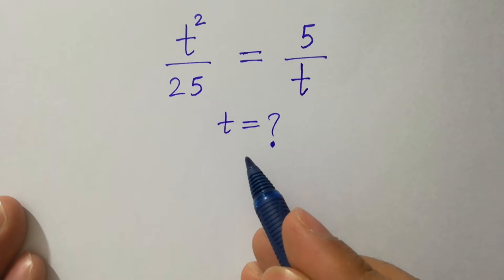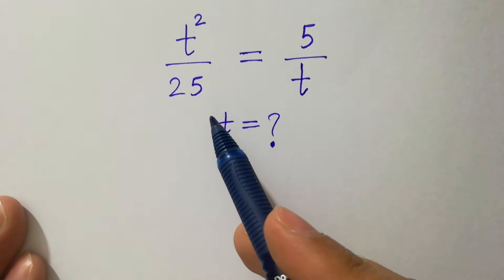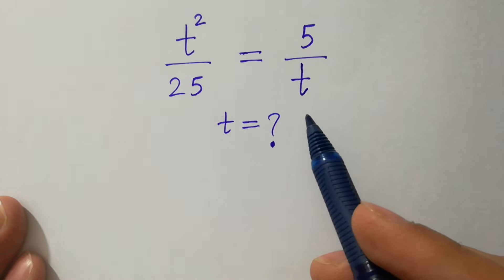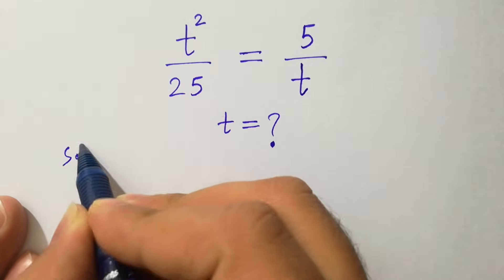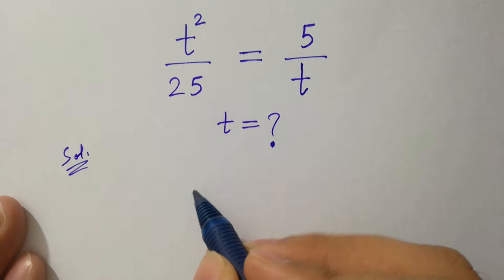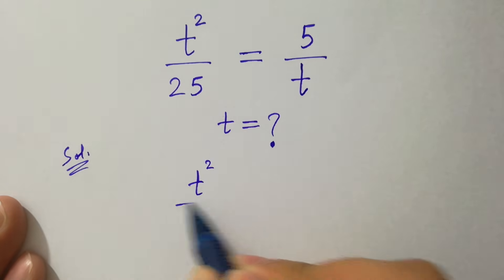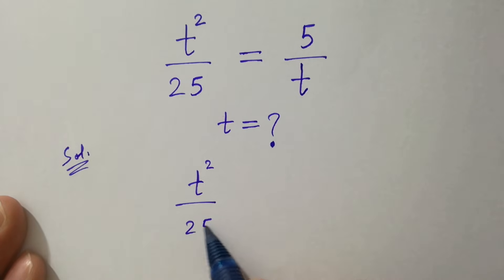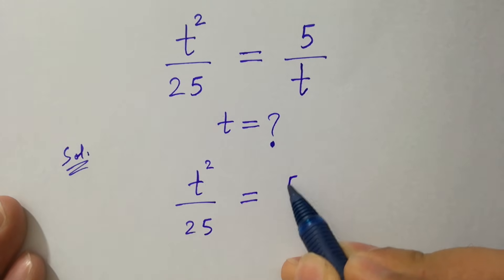Friends, find the value of t if t squared over 25 equals 5 over t. Let's have a solution. So we have the problem of t squared over 25 which is equal to 5 over t.